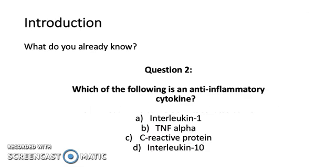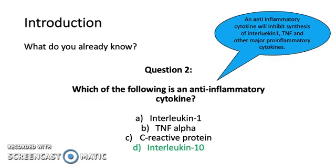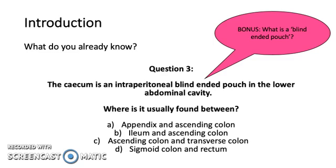Which of the following is an anti-inflammatory cytokine? Interleukin-10. An anti-inflammatory cytokine will inhibit the synthesis of interleukin-1, TNF, and other major pro-inflammatory cytokines. The cecum is an intraperitoneal blind-ended pouch in the lower abdominal cavity — where is it usually found? Between the ileum and the ascending colon.